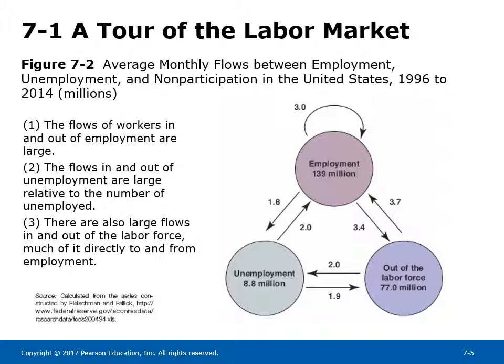Figure 7-2 shows average monthly flows between employment, unemployment, and non-participation in the United States. To understand what a certain unemployment rate means for individual workers, we must look at the movement of workers. Each month, a large number of workers moves in and out of employment, unemployment, and into and out of the labor force. For example, out of 8.8 million unemployed, about 3.9 million left the ranks of the unemployed — 2 million found jobs and 1.9 million dropped out of the labor force. The average duration of unemployment in this case is 2-3 months.